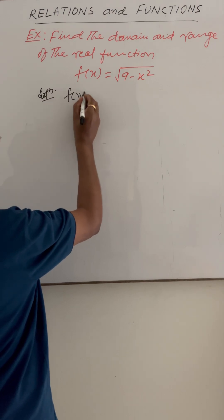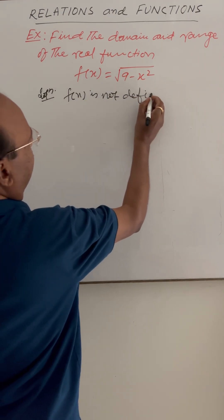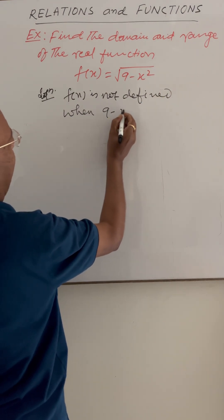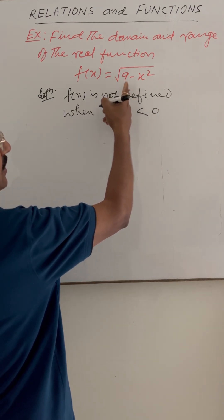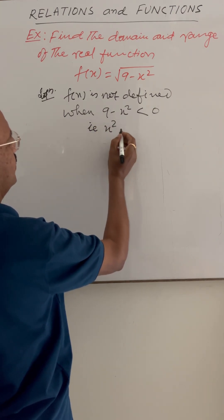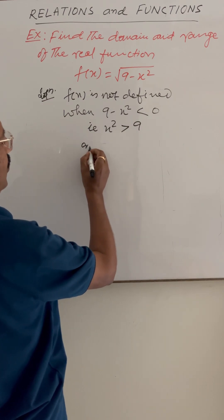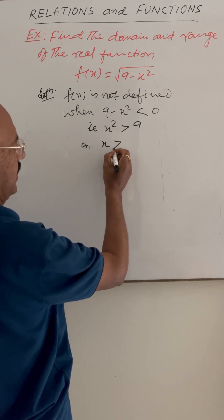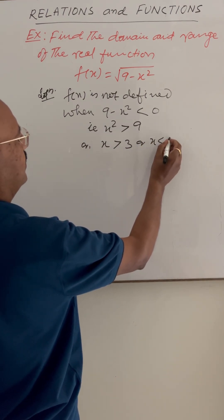Clearly f(x) is not defined when 9 minus x² is less than zero, because it should be positive under the radical sign. That is, x² is greater than 9, or x is greater than 3 or x is less than minus 3.